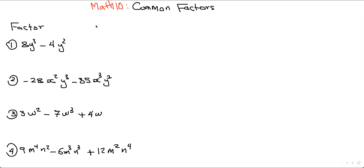The first thing we do in factoring is the greatest common factor. The greatest common factor is something you have to do all the time. Even when you go further into factoring, always the first thing you look for is whether you have a greatest common factor. But that comes later — for now, here we're doing the greatest common factor.